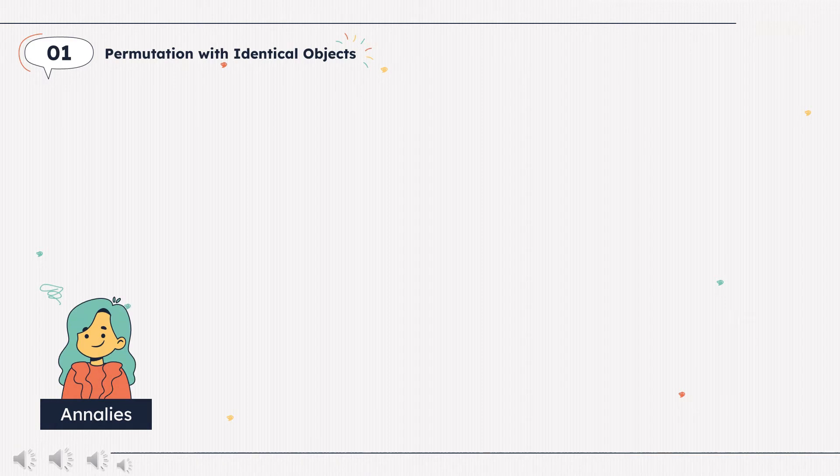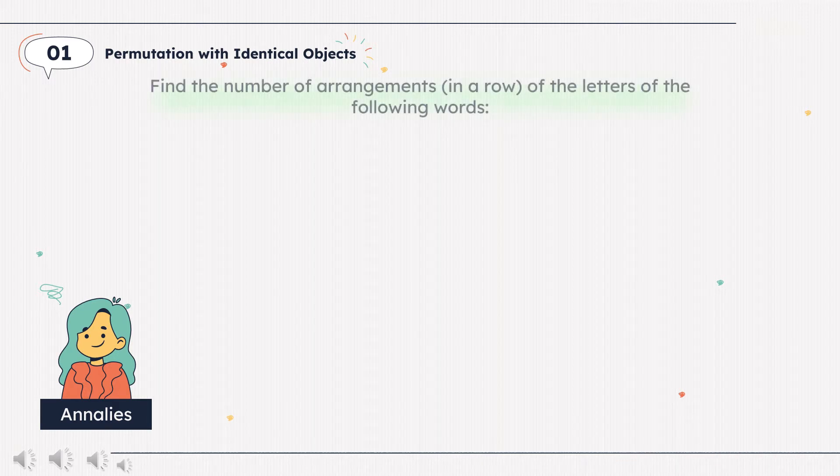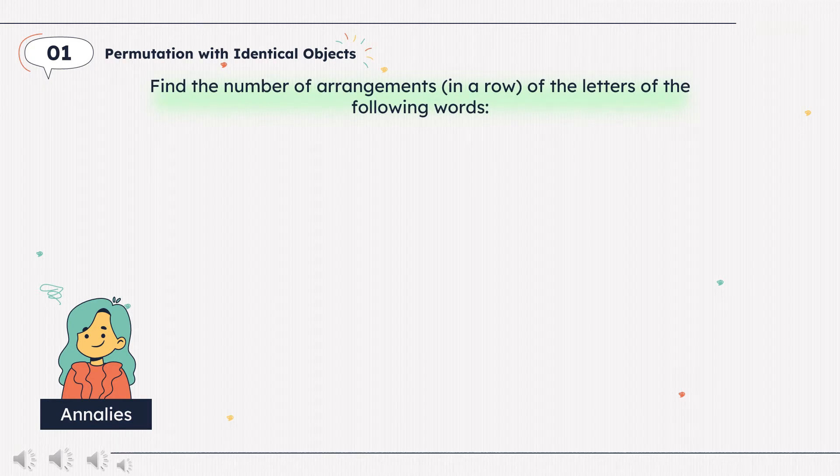Hi, I am Analyst Tisha Jay Amarante, and here are the examples of permutation with identical objects. Find the number of arrangements in a row with the letter of the following words. Number 1, Twitter.